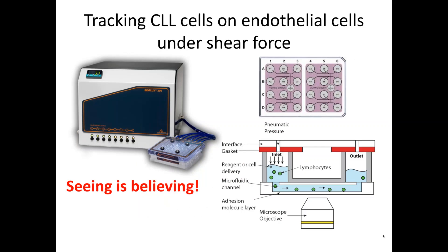Getting to the BioFlux 200: we use a 24-well plate format with two inlets and one outlet port per experiment, allowing eight parallel experiments. On this pictorial representation, what we did was lay down endothelial cells — in this case, HUVECs — and allowed them to adhere and spread and then line up under shear force before we introduced our CLL B cells.